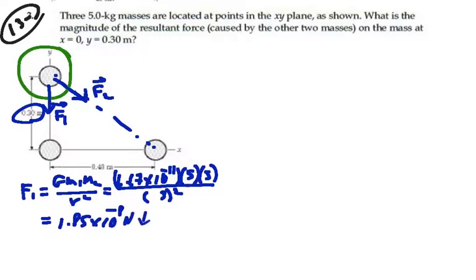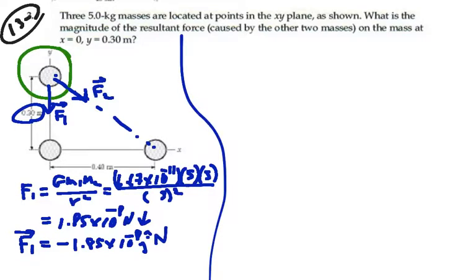Directed totally down like this. So if I wrote this as a vector, it would be equal to negative 1.85 times 10 to the minus 8 j newtons. That's vector force F1.